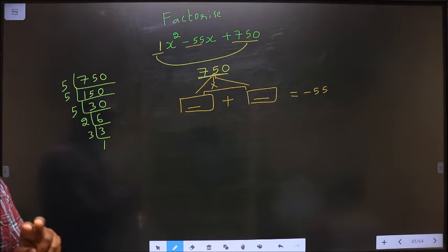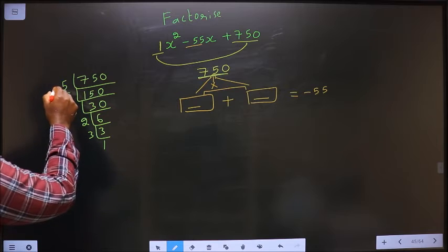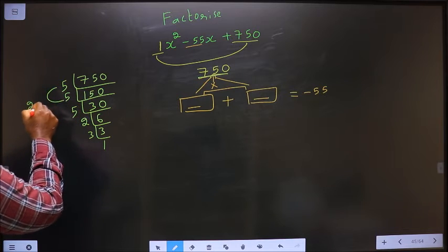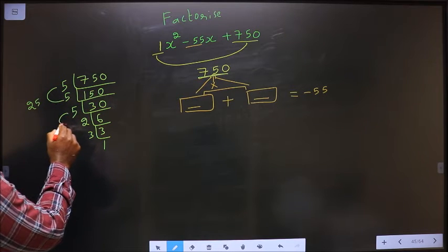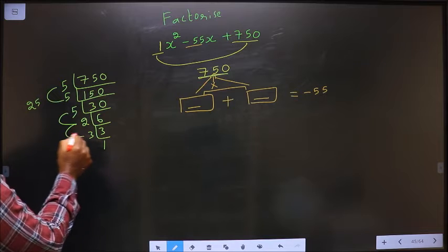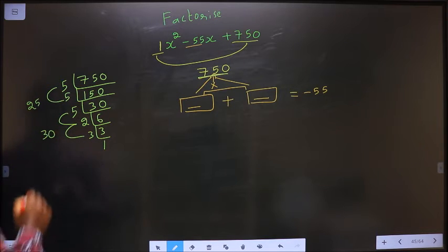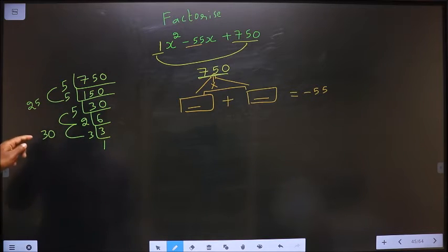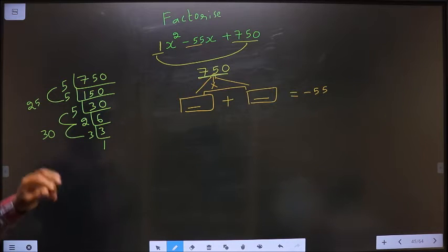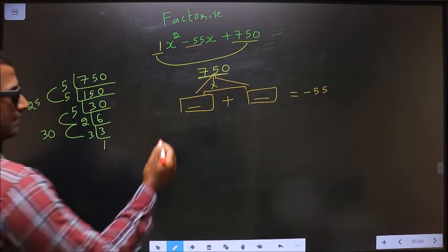So now the two numbers are 5 × 5 = 25, 5 × 2 = 10, 10 × 3 = 30. So 25 + 30 = 55, and 25 × 30 = 750.